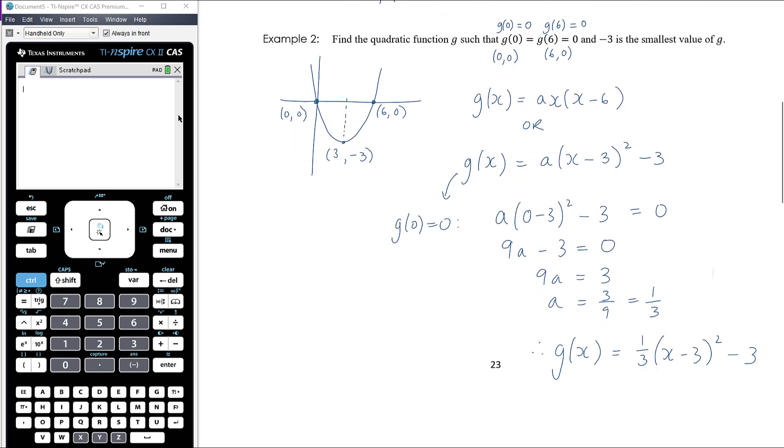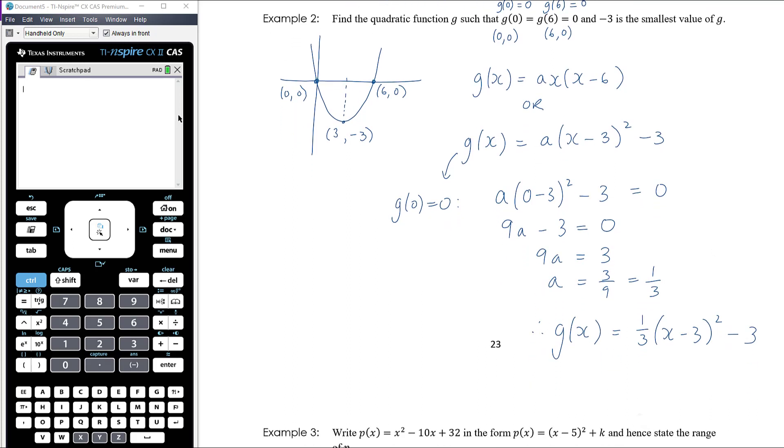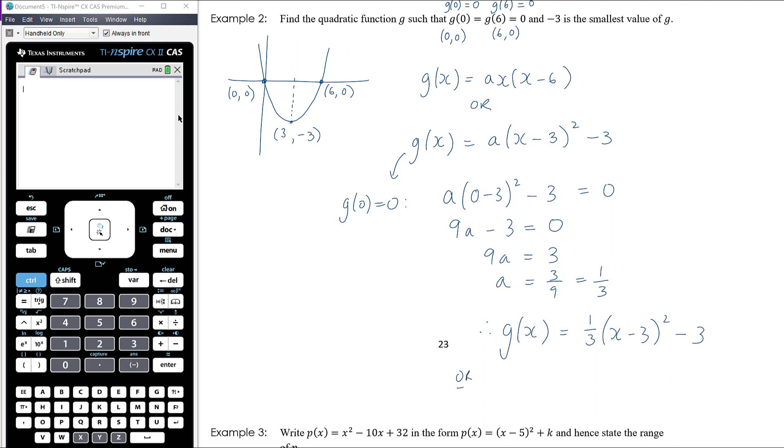Again, if you had your equation in factorized form, you would have got an equation which was g(x) equals (1/3)x(x - 6), and if you expanded that out, you would get (1/3)x² - 2x. These are all perfectly valid answers to this question; they're all exactly the same equation, and they all are quadratic functions where g(0) equals 0, g(6) equals 0, and the smallest value of g, that is the y-value of the turning point, is -3.